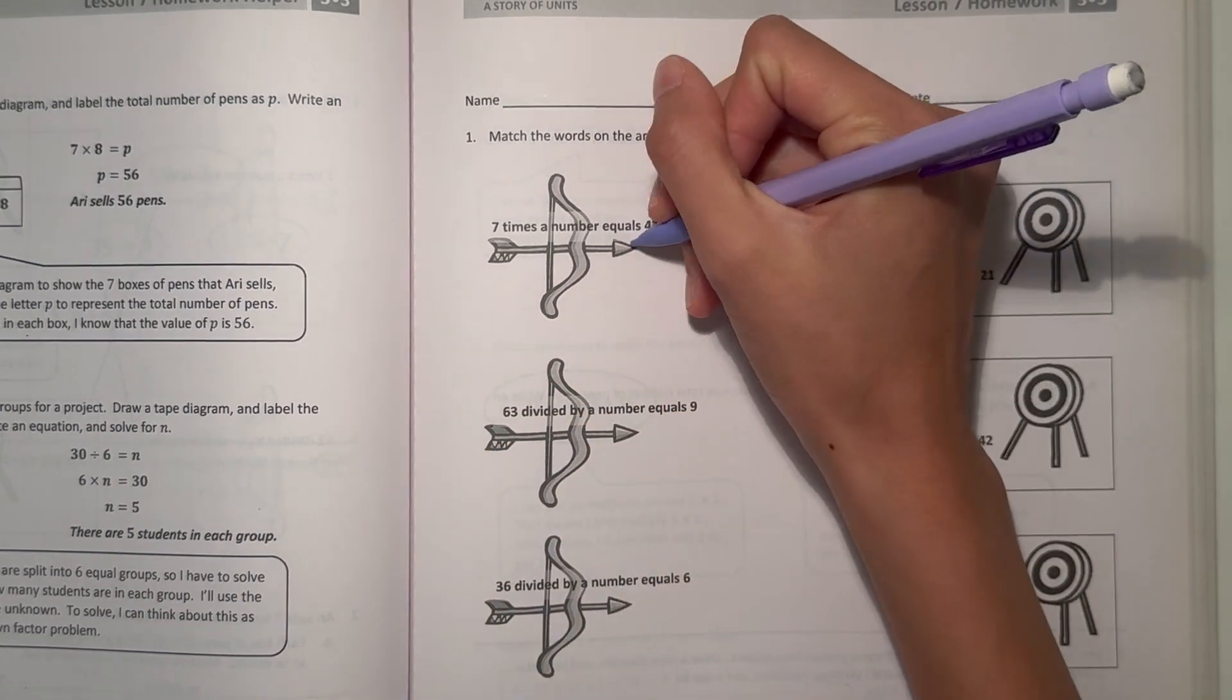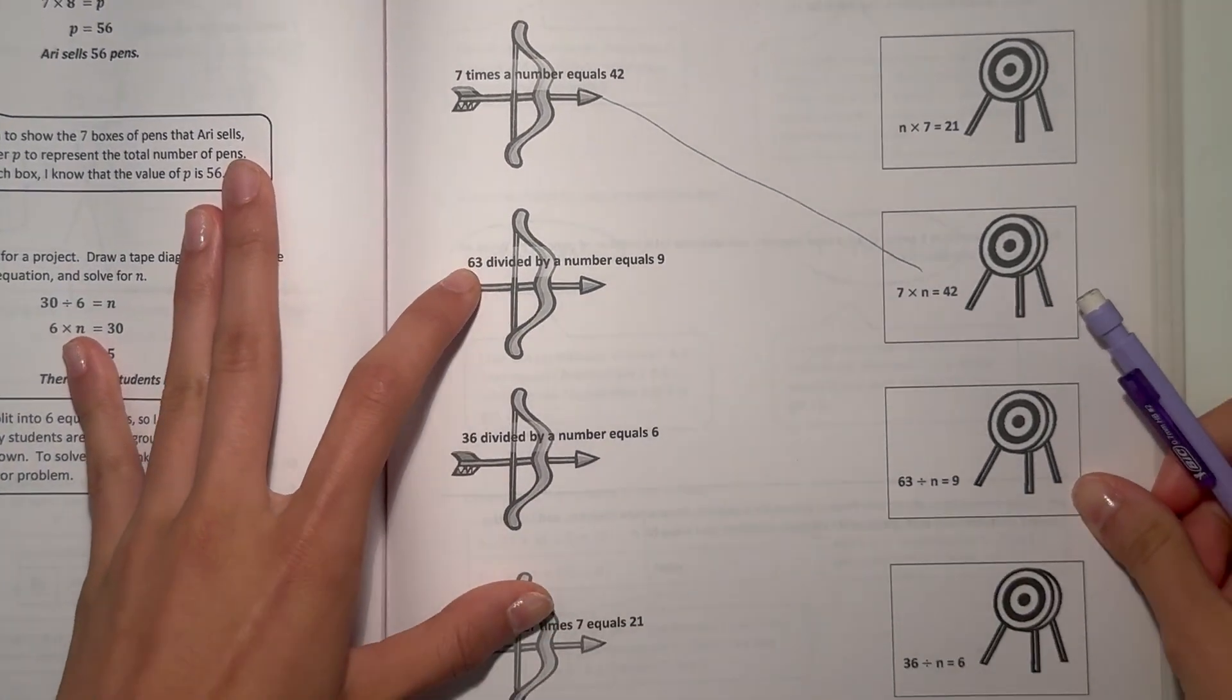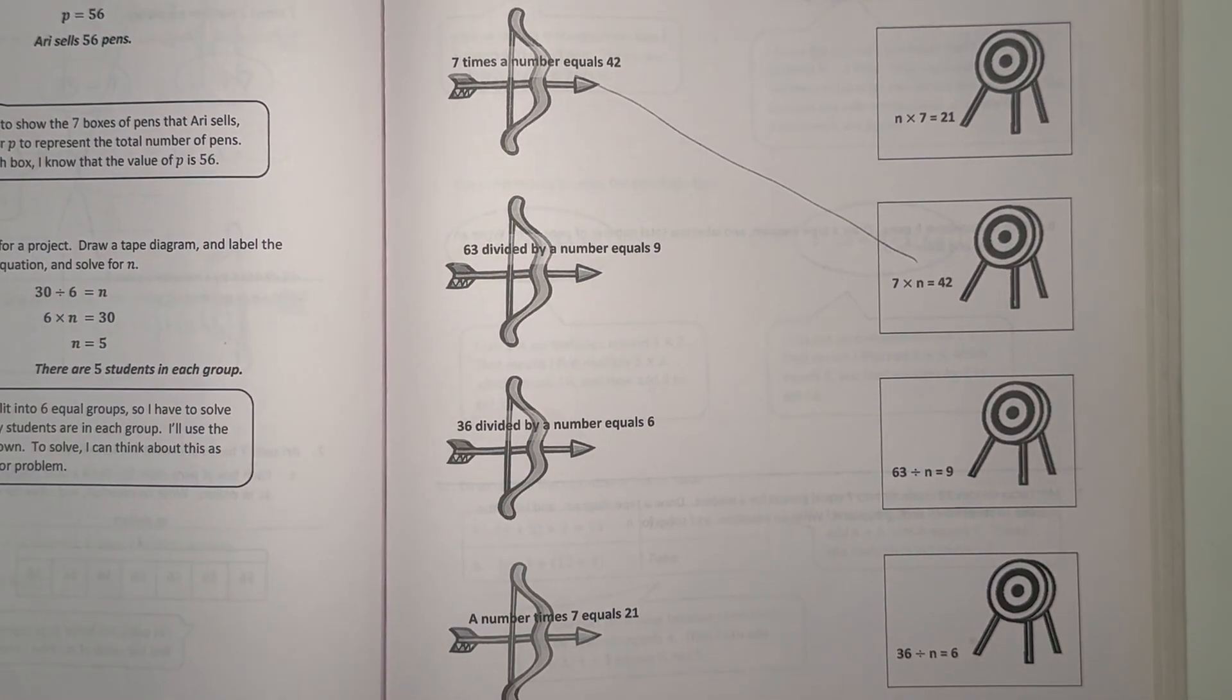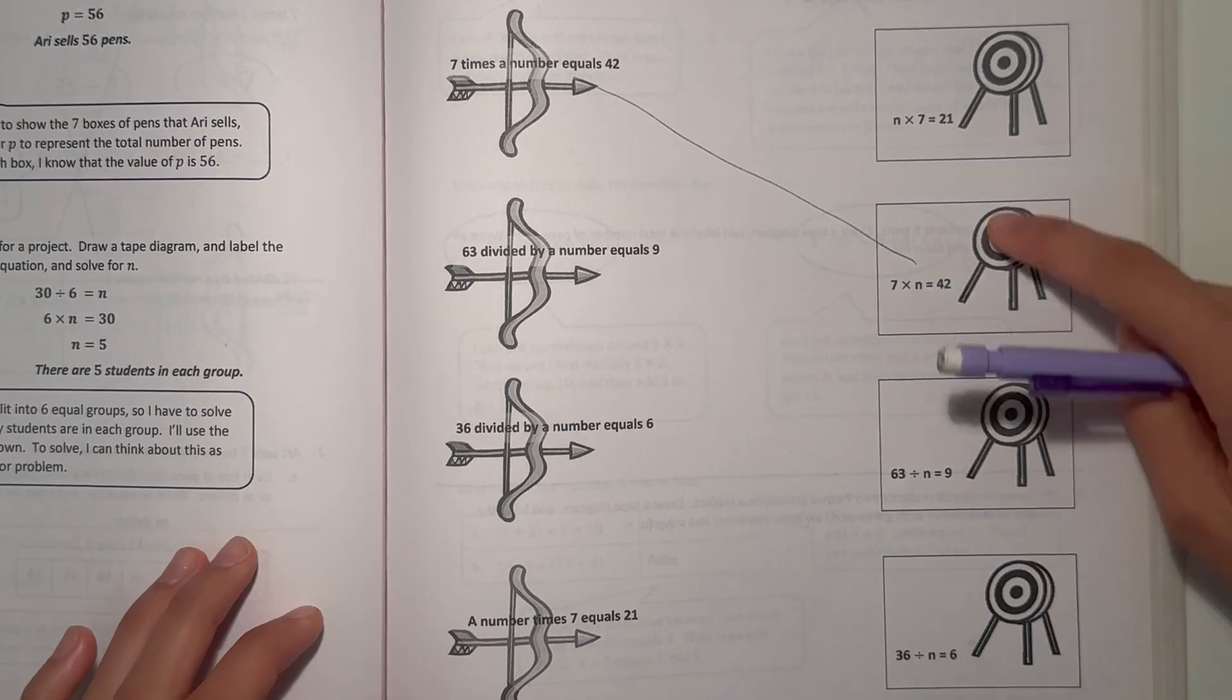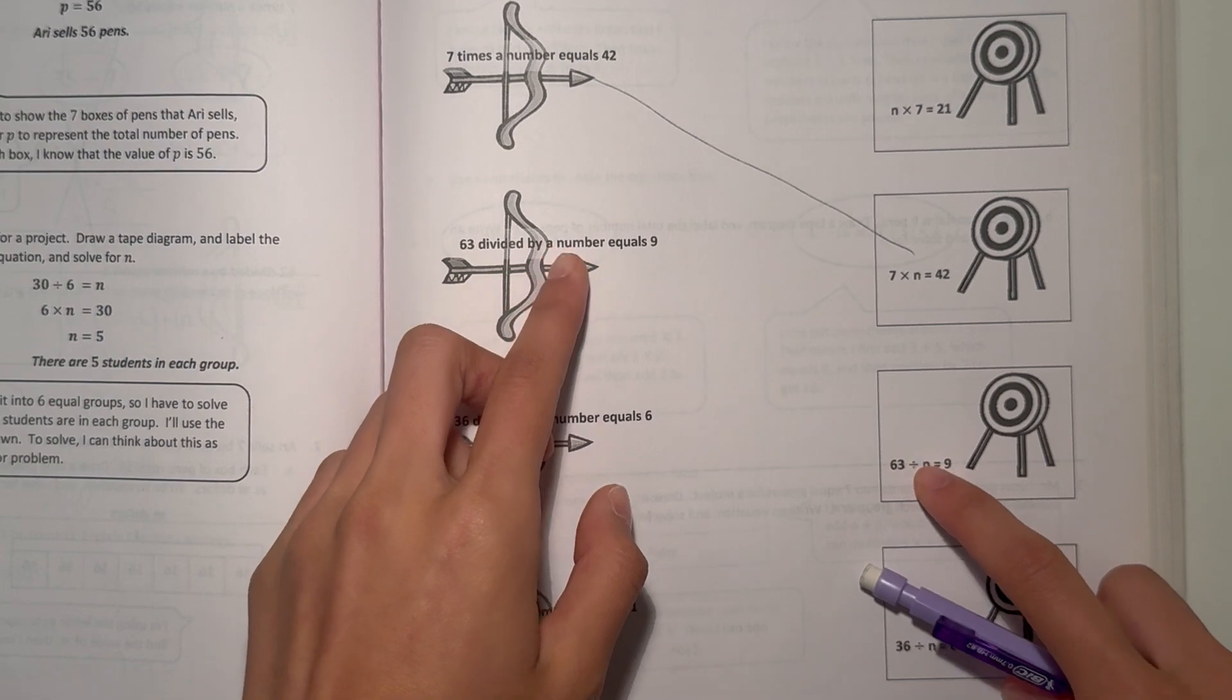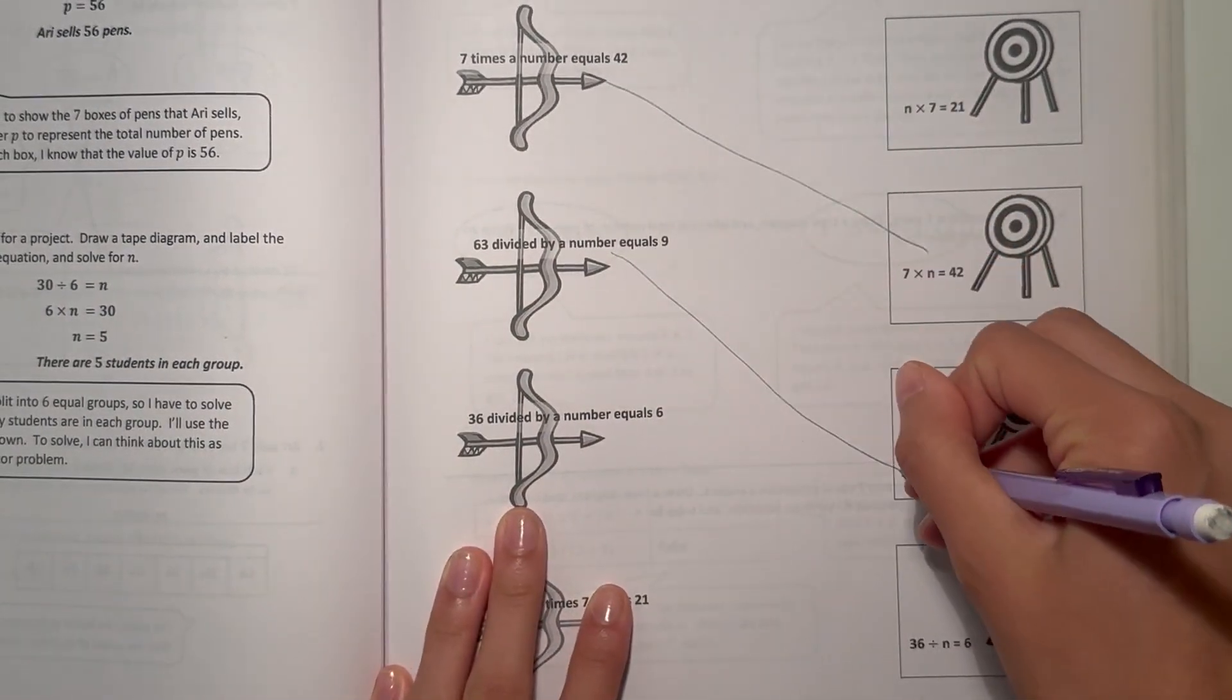So these two arrows in the board, in the target match. Alright, and now it says 63 divided by a number equals 9. So what on this page, on the targets equals 9? Over here it says 63 divided by a number that we don't know equals 9. So this matches with that.